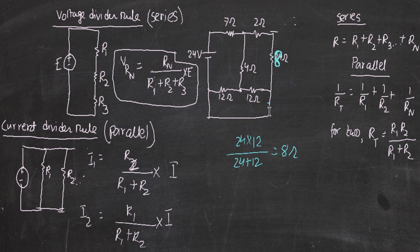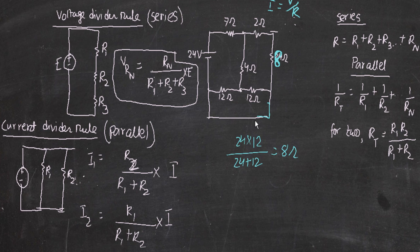We now have a simplified portion of the circuit. The question asks us to find the total resistance and total current, and we know total current is given by I = V / R. We know the total voltage is 24 volts, so we just need the total resistance. The next simplification: 2 ohms and 8 ohms are in series, so 2 + 8 = 10 ohms.